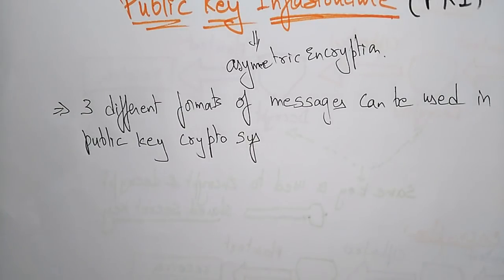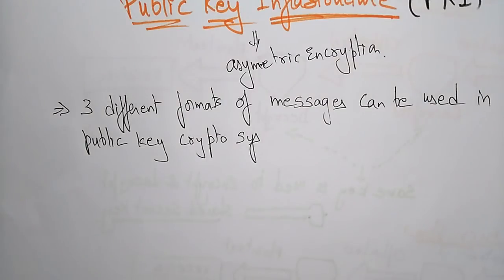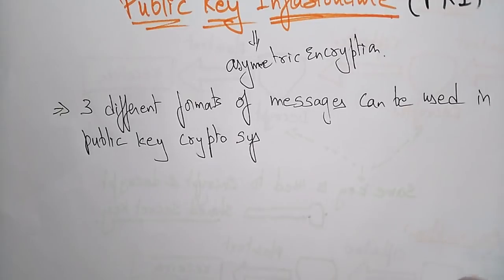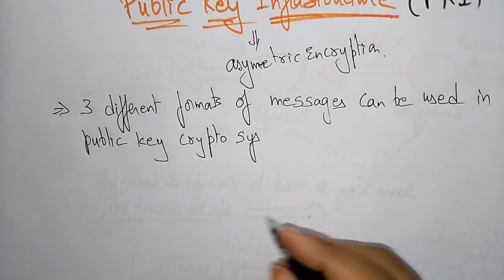A cryptosystem means sending data to the receiver side in a confidential manner — that complete process is called cryptography. There are three different formats of messages that can be used in a public key cryptosystem.